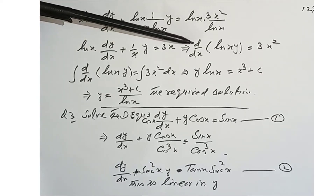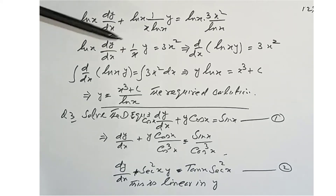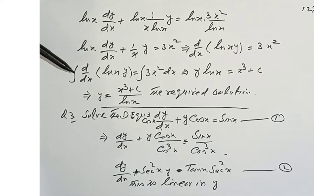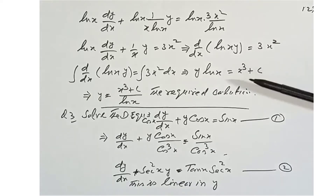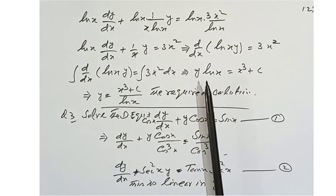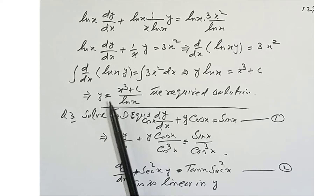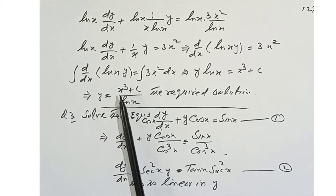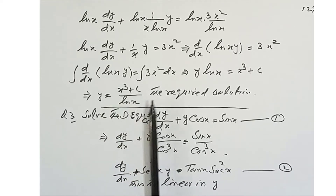The left-hand side is the derivative of ln(x) · y. We integrate both sides; the integral and derivative cancel, giving y·ln x = x³ + c. Dividing by ln x, the required solution is y = (x³ + c)/ln x.